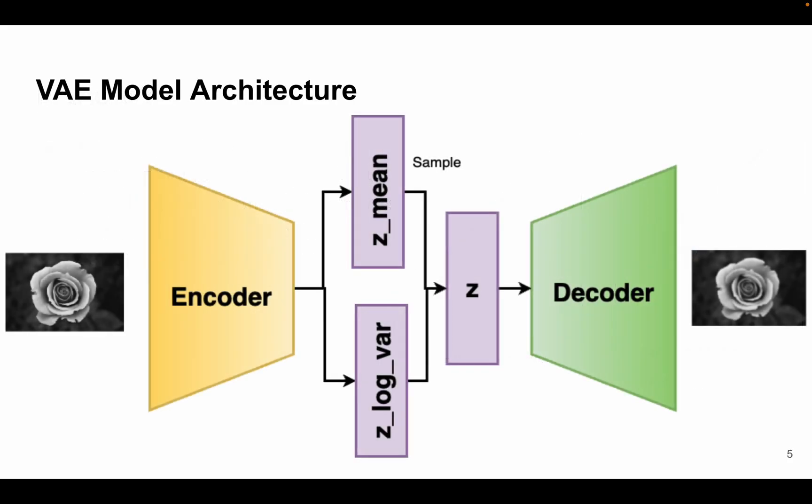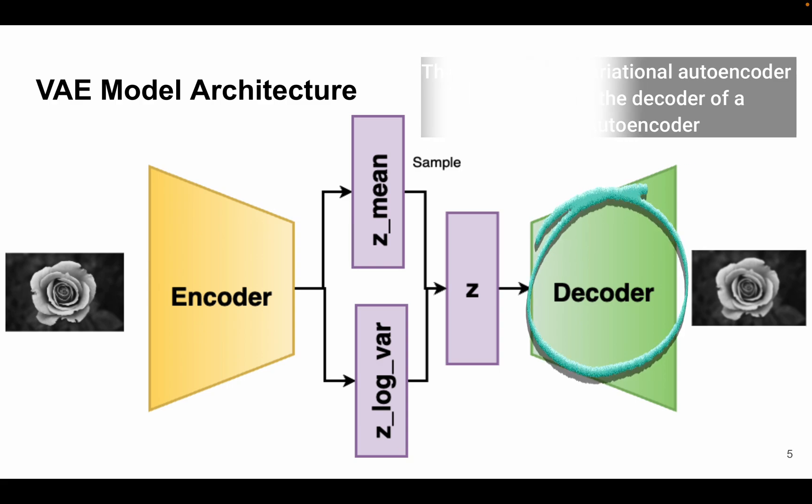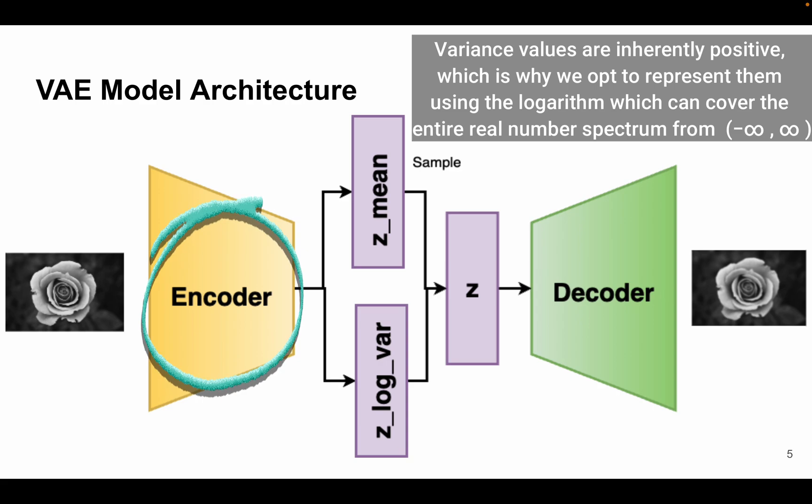Now let's quickly go through the architecture of this variational autoencoder. I'll try to cover each and every block. First off, let's cover the decoder part. Now the decoder of variational autoencoder is identical to what we studied in the plain or vanilla autoencoder. So we will not touch that decoder part as we have already studied that. The main important changes in variational autoencoder are made in the encoder part. We need to tweak the encoder part in VAE model architecture. Now variance values are inherently positive, which is why we opt to represent them using logarithm, which can cover the entire real number spectrum from negative infinity to positive infinity.